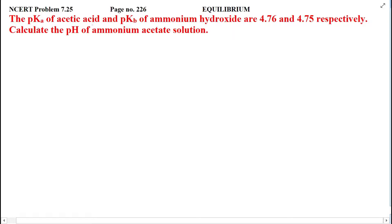The pKa of acetic acid and pKb of ammonium hydroxide are 4.76 and 4.75 respectively. Calculate the pH of ammonium acetate solution. Now we have acetic acid dissociation constant given that is 4.76 and ammonium hydroxide base dissociation constant given that is 4.75.